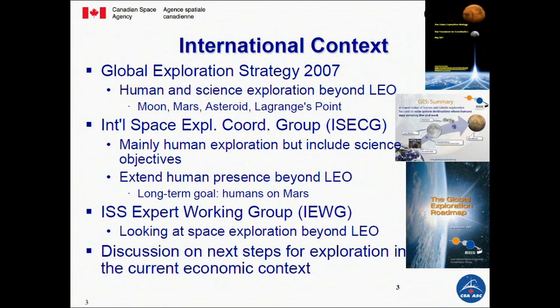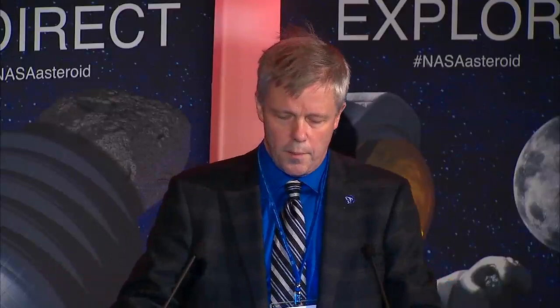The international context is also important. From a human exploration point of view, there has been discussion for several years about the Global Exploration Strategy, which was created after NASA's announcement of the Moon return. The international community was asked to participate and said the Moon is good, but Mars, asteroids, and Lagrange points are also good. This led to the creation of ISEC — the International Space Exploration Coordination Group — focusing on human exploration but also including science, and increasingly looking at how robotic and human exploration can work together so each benefits from the other.